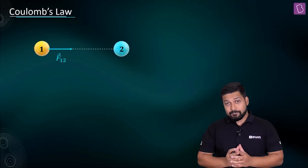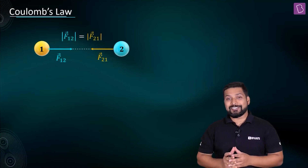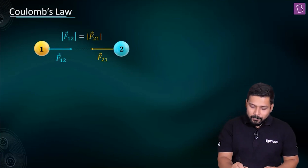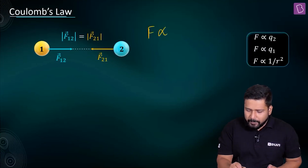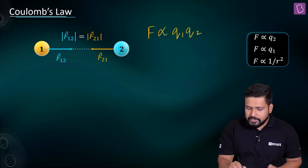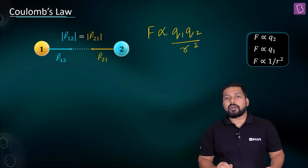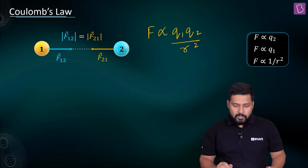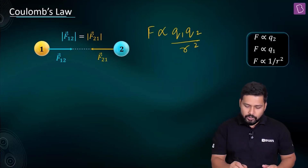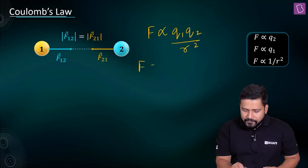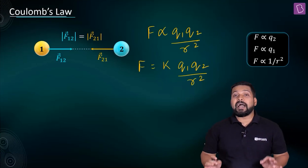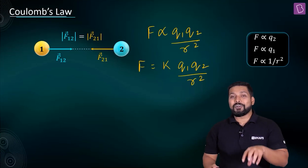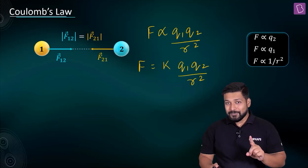From Coulomb's law, we can now state: F is directly proportional to the product of the two charges and inversely proportional to the square of the distance between them. Removing the proportionality and introducing a constant k, we get the final formula: F = k·Q1·Q2 / r². This is a very important formula to remember.